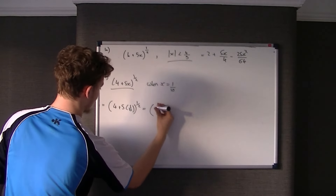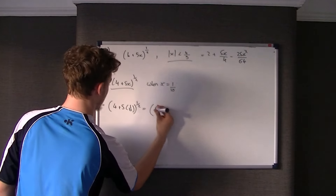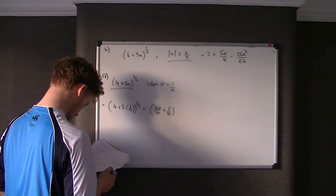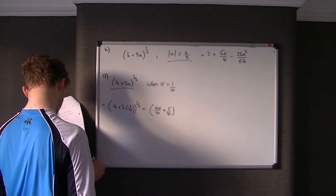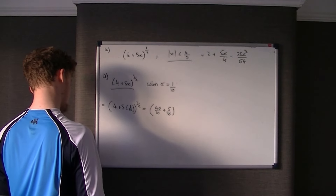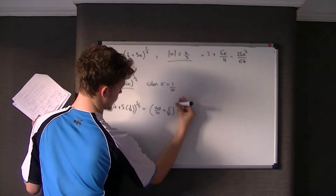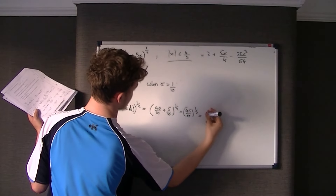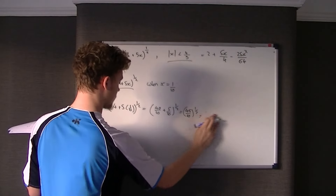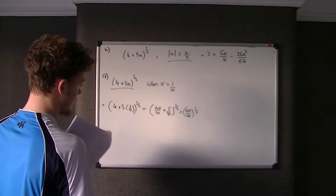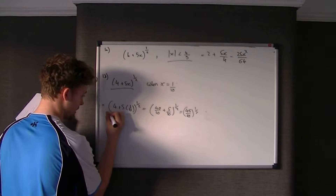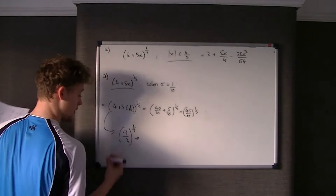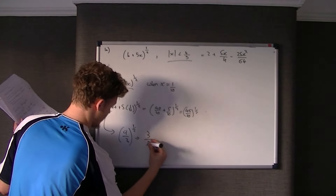So it's the square root of (4 + 5 times a tenth). Converting to tenths: that's 40 over 10 plus 5 over 10, giving 45 over 10, which simplifies to 9 over 2. Taking the square root, we get the square root of 9 over the square root of 2, which is 3 over root 2.